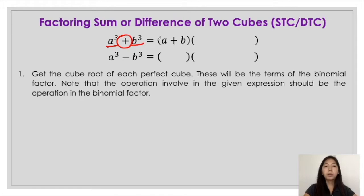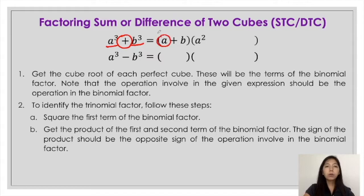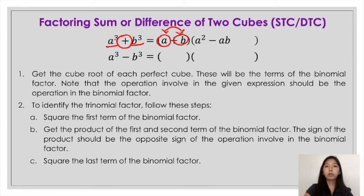Next, to get the terms in the trinomial factor, you have to look at the binomial factor. First, square the first term — the first term here is a, so the square of a is simply a squared. Next, multiply the two terms: a times b is simply ab, and get the opposite sign. Since the sign in between is positive, the sign in the second term would be the opposite, which is negative — so that would be negative ab. Lastly, square the second term: the square of b is b squared. So the factors of a cube plus b cube are the quantity of a plus b times the quantity of a squared minus ab plus b squared.